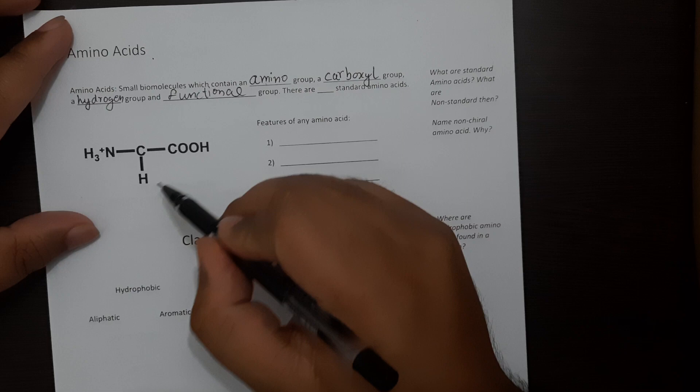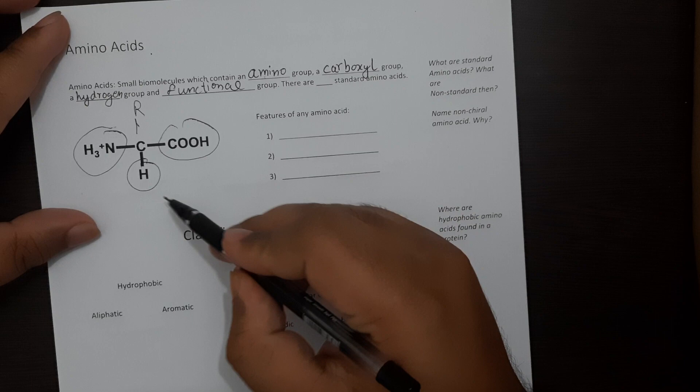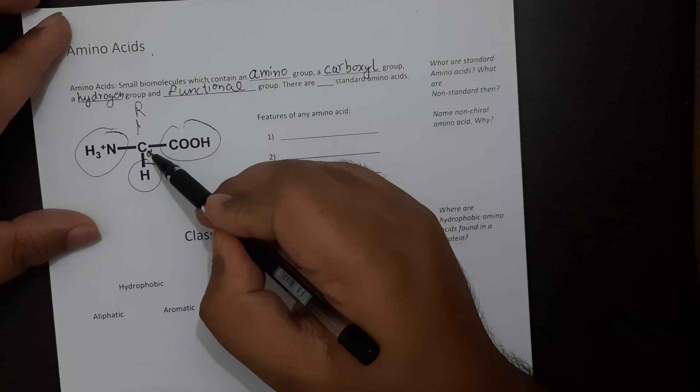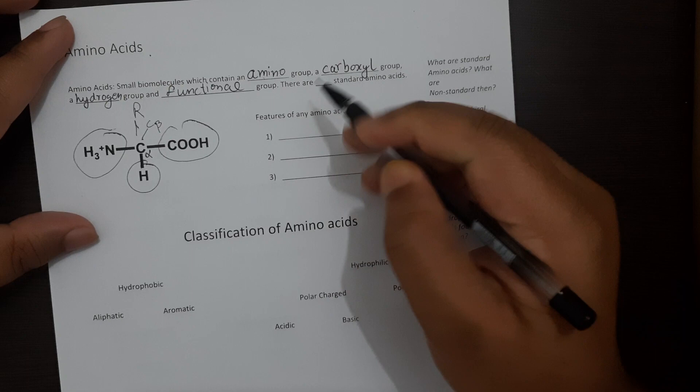Amino acids are basically small biomolecules which contain an amino group, a carboxyl group, a hydrogen group and a functional group which is usually denoted by the letter R. Everything is always attached to the alpha carbon. This carbon is known as your alpha carbon and any other carbon atom attached to it will be further known as the beta carbon and so on.